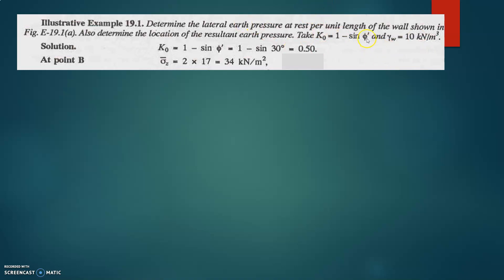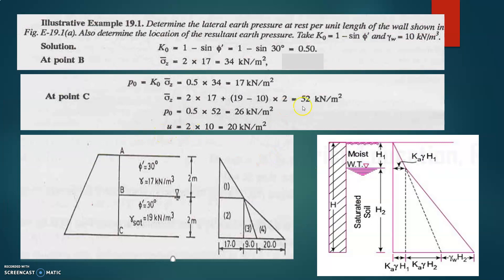In some textbooks they use phi-dash instead of phi — either notation is fine. With phi equal to 30 degrees, K₀ equals 1 minus sin 30 equals 0.5. You then find pressures at different points. The diagram shows phi-dash equal to 30 degrees and gamma equal to 17 kilonewton per meter cube for the upper layer, and phi-dash equal to 30 degrees with gamma-saturated equal to 19 kilonewton per meter cube for the lower layer. I have already solved this type of problem before, so try to solve it and we will discuss during the next session. Thank you.